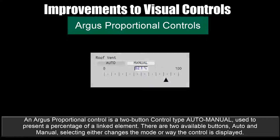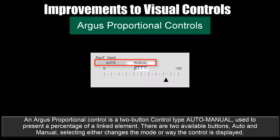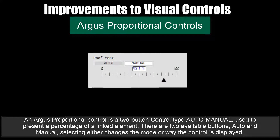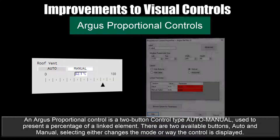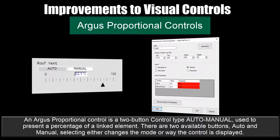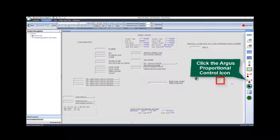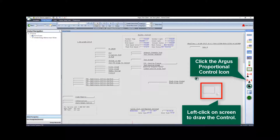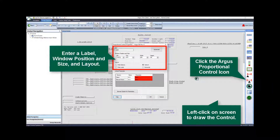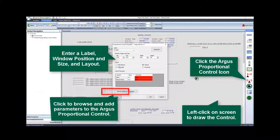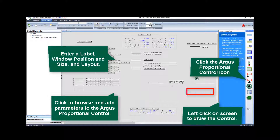An Argus proportional control is a two-button control type — auto and manual — used to present a percentage of a linked element. Selecting either button changes the mode or the way the control is displayed. The properties dialog is used to change the control settings. To configure: click the Argus proportional control icon, enter a label, window position and size, and layout, then browse and add parameters.